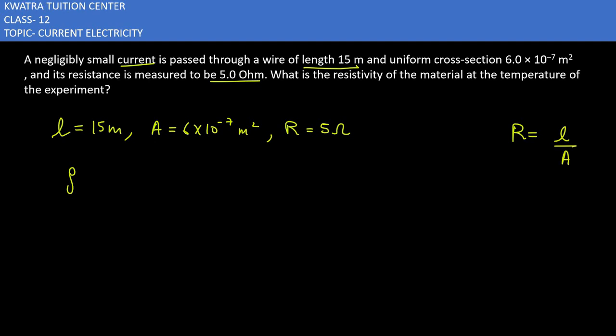R equals rho L over A, and from this resistivity formula, rho equals - from this formula, A goes to the numerator with R, and L goes to the denominator, so it would be R times A over L.